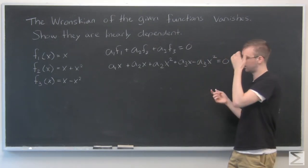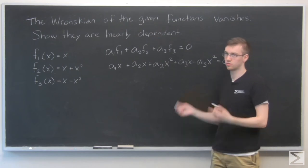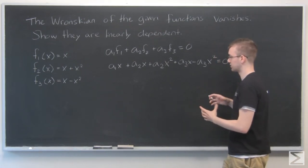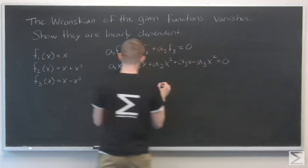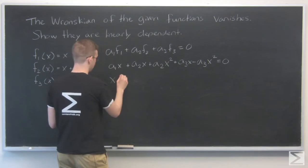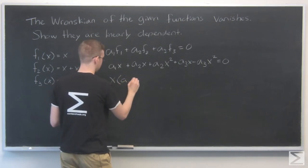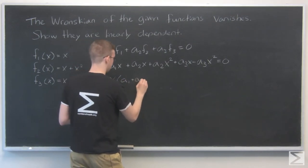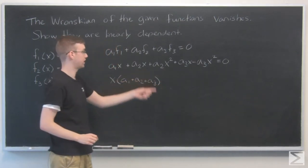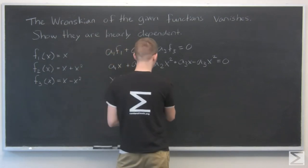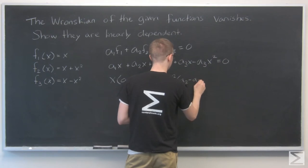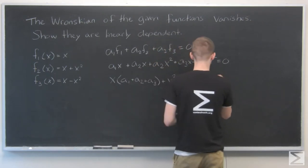Everything here is in terms of x's and x²'s. I'm going to group like terms together and factor. For the x terms, that's x times (a1 + a2 + a3). And for the x² terms, that's x² times (a2 - a3). So we have x(a1 + a2 + a3) + x²(a2 - a3) = 0.